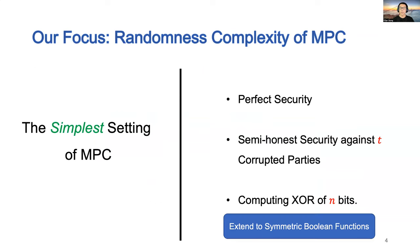We study the randomness complexity of MPC. We start with the simplest setting of MPC, that is, perfect and semi-honest security against t corrupted parties, and computing the XOR function. Later, I will mention extensions to other functions and MPC models.